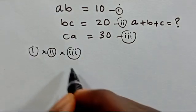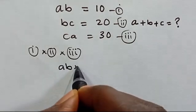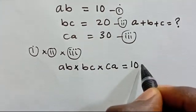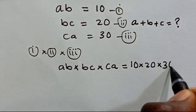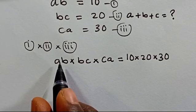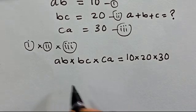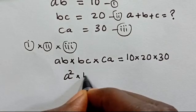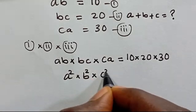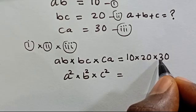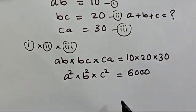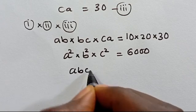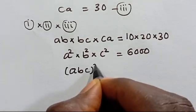From here we have ab times bc times ca equals 10 times 20 times 30. So ab times bc times ca gives us a-squared times b-squared times c-squared, and 10 times 20 times 30 gives us 6,000.